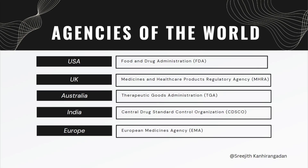Before we go into the definitions further, let me quickly show you a list of various regulatory agencies around the world. Every country has regulatory agencies. USA has the Food and Drug Administration, or FDA. UK has the Medicines and Healthcare Products Regulatory Agency. Australia has the Therapeutic Goods Administration. India has the Central Drugs Standard Control Organisation. And Europe has the European Medicines Agency.